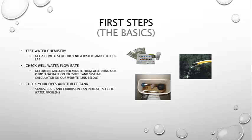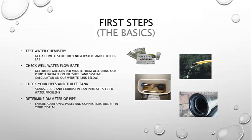Then, check your pipes and toilet tank. Stains, rust, and corrosion can indicate specific water problems. Finally, determine the diameter of your pipe to ensure additional parts and connectors will fit in your system.